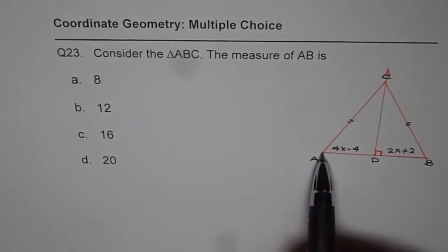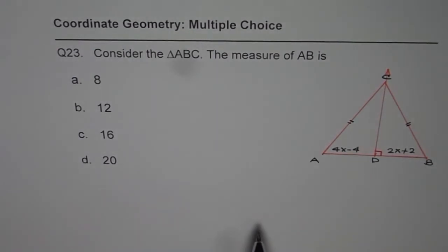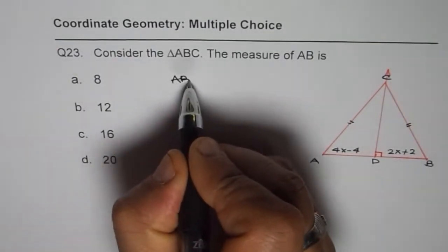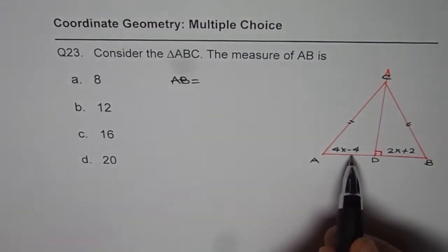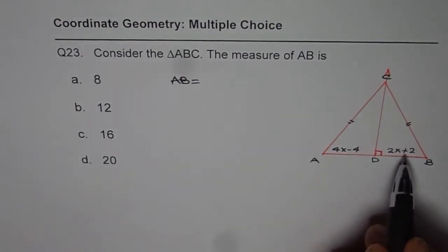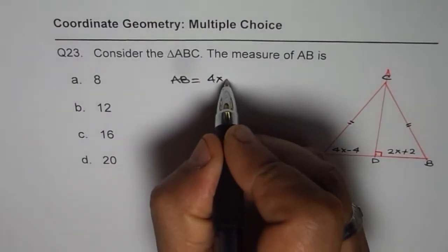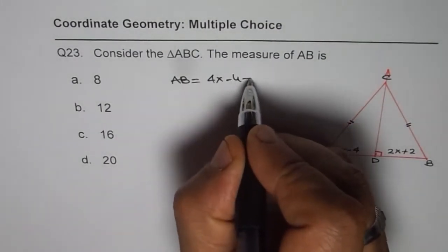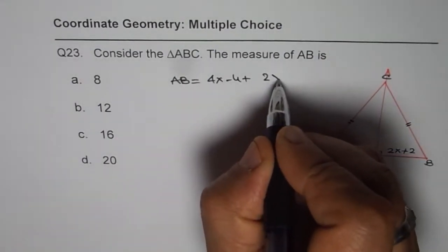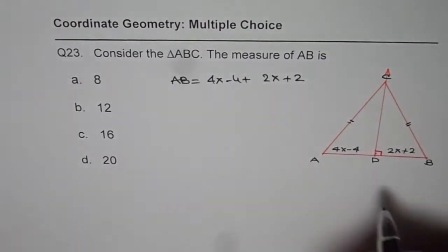So we need to find the measure of length AB. Now we know AB equals 4x minus 4 plus 2x plus 2. That is what AB is. But how do we find the length AB? It is 4x minus 4 plus 2x plus 2. How do we find it?